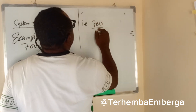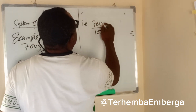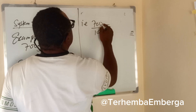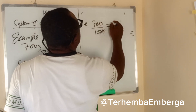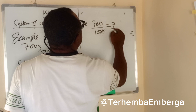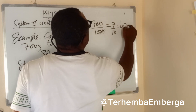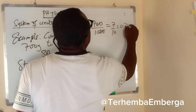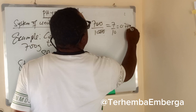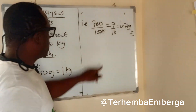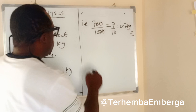700 divided by 1000 — two of the zeros cancel, giving 7 over 10, which is equal to 0.7 kg. Let's look at another example.